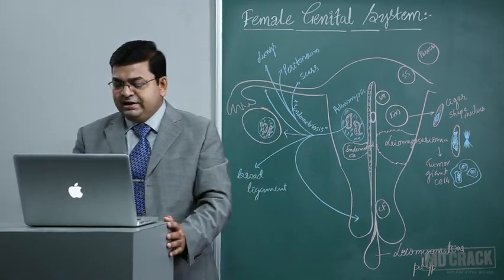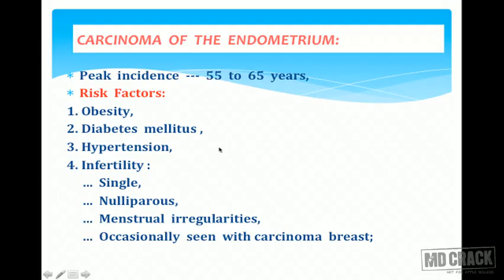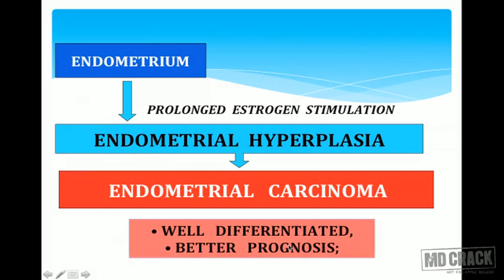The peak incidence of endometrial carcinoma is in elderly postmenopausal women, around 55–65 years of age. Risk factors include hyperestrogenic status due to nulliparity and unopposed estrogen levels — the same risk factors as carcinoma of the breast. Obesity and diabetes patients have the highest risk of developing endometrial carcinomas. Hypertension, being unmarried or nulliparous, menstrual irregularities, and complex endometrial hyperplasia also impose risk.